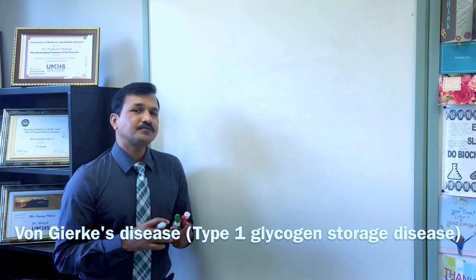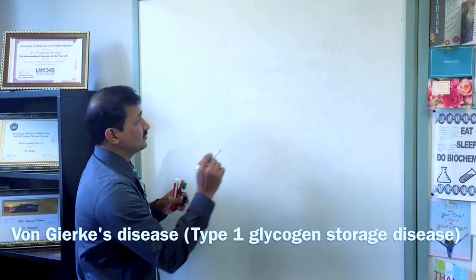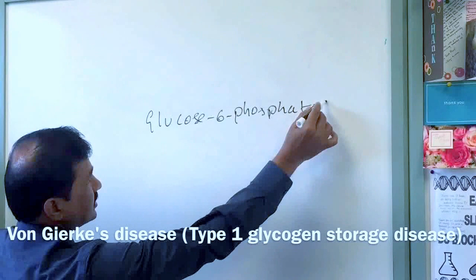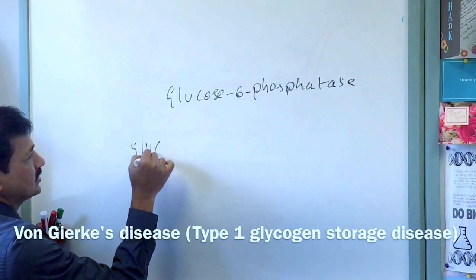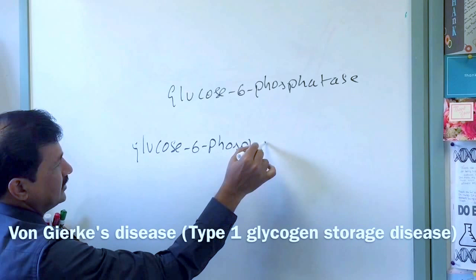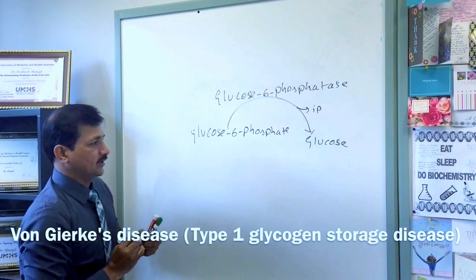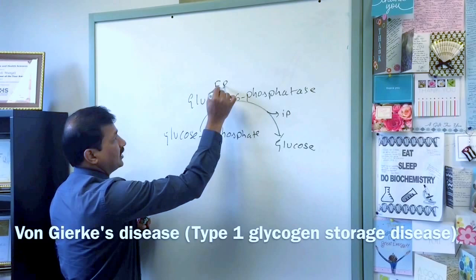In type 1a, the deficiency of glucose-6-phosphatase means this enzyme cannot convert glucose-6-phosphate into glucose. It releases an inorganic phosphate and converts glucose-6-phosphate into a glucose molecule. This particular enzyme is located in the endoplasmic reticulum.